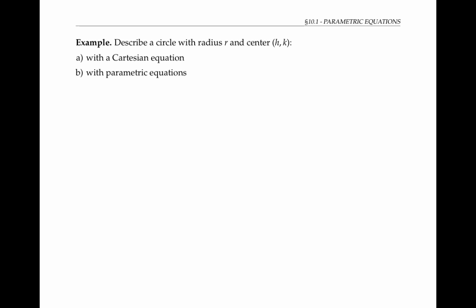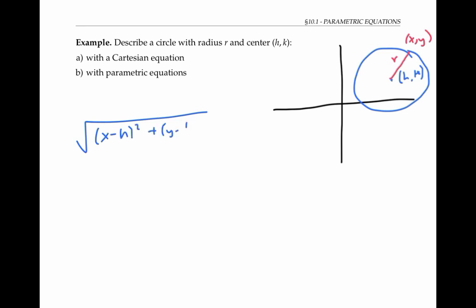As a final example, let's describe a general circle of radius r and center h, k. For any point x, y on the circle, we know that the distance from that point x, y to the center of the circle is equal to r. So using the distance formula, we know that the square root of x minus h squared plus y minus k squared has to equal r. Squaring both sides, this gives us the equation for the circle in Cartesian coordinates. So for example, if our circle has radius five, and has center at the point negative three, 17, then its equation would be x minus negative three, that's x plus three squared, plus y minus 17 squared is equal to 25.